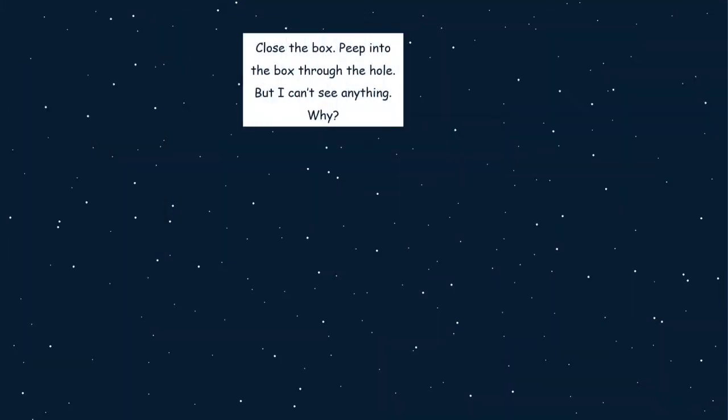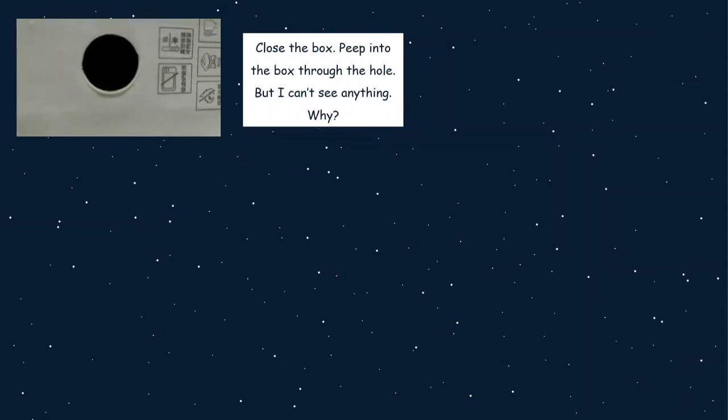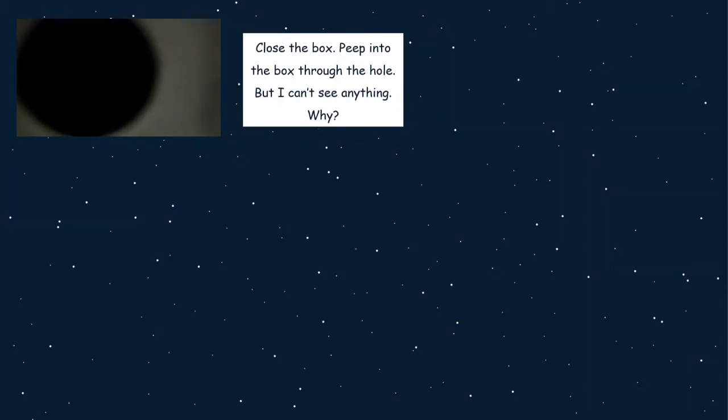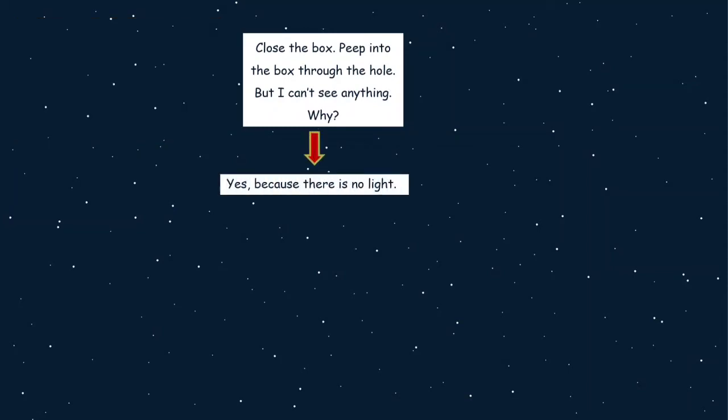Next step is close the box. Peek into the box through the hole. But I cannot see anything. Why? Do you know what is the reason? Yes, right. Because there is no light inside the box.